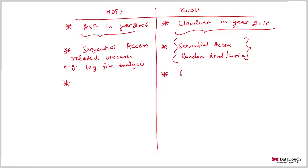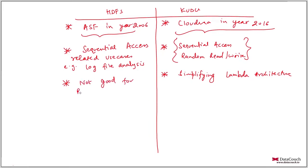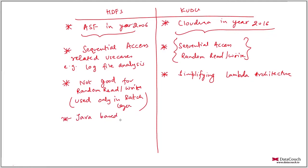Apart from that, Kudu is simplifying the big data lambda architecture, as it can be used in the batch layer as well as in the speed layer. HDFS is not good for random read and random write use cases, so it is not suitable for the speed layer and is used only in the batch layer of lambda architecture.